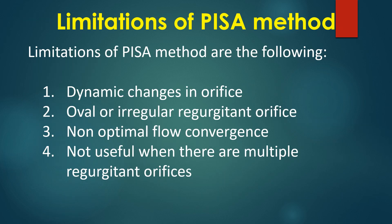Limitations of the PISA method include: 1. Dynamic change in orifice; 2. Oval or irregular regurgitant orifice; 3. Non-optimal flow convergence; and 4. Not useful when there are multiple regurgitant orifices.